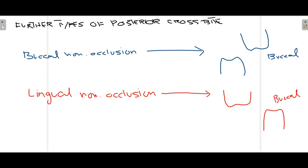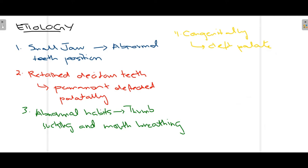Posterior crossbite can be further classified into two types: buccal non-occlusion and lingual non-occlusion. In buccal non-occlusion, the maxillary molar is placed very buccally compared to the mandibular molar, causing occlusal trouble. In lingual non-occlusion, the maxillary molar is present lingually compared to the mandibular molar.